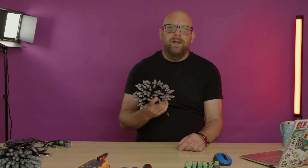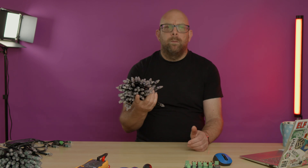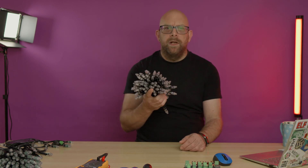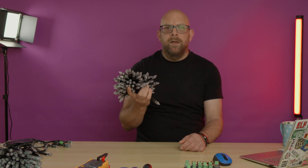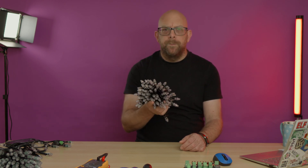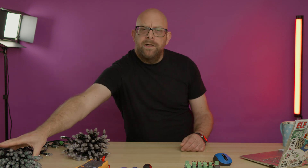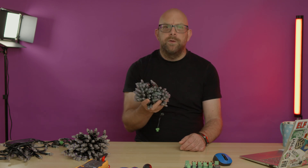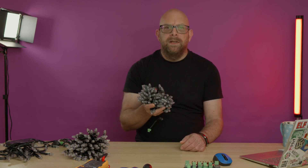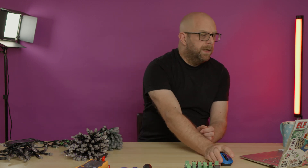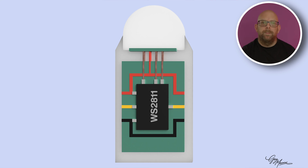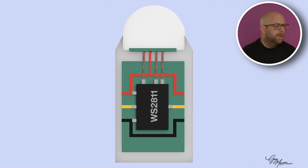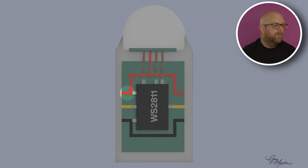So 4-wire pixels with redundant data - how do they work and what makes them different to our traditional 3-wire WS2811 pixels that we've used for the last few years? Well the first thing we need to do is take a look at how our traditional 3-wire pixels work and where their vulnerabilities are. Now if we take a look at the makeup of a traditional 3-wire pixel, we can see that the 3 wires coming in are power in red, data in yellow and ground in black.